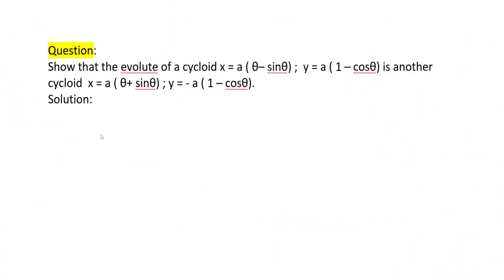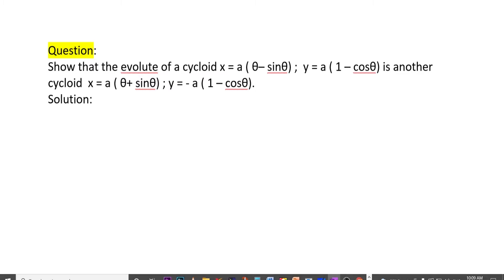Hi students. In this video we are on the evolute topic of a cycloid: x = a(θ − sin θ), y = a(1 − cos θ). The evolute is another cycloid: x = a(θ + sin θ), and y = −a(1 − cos θ). We will do a proof of this cycloid equation, showing that the evolute of a cycloid is again a cycloid.